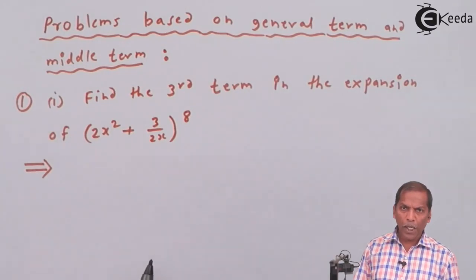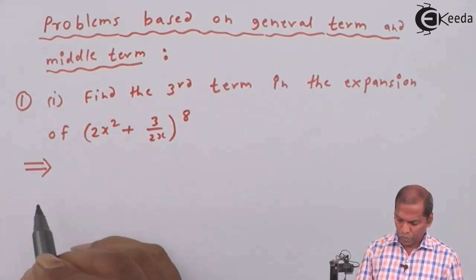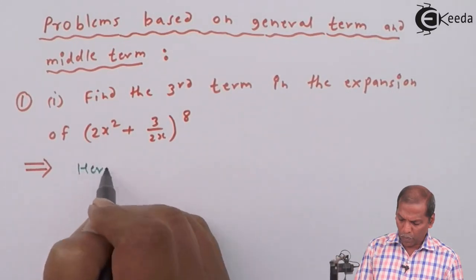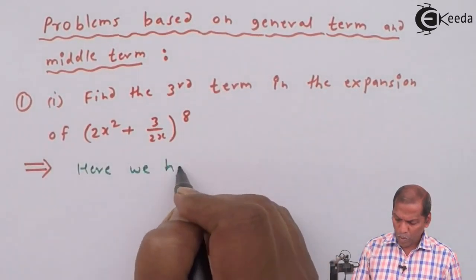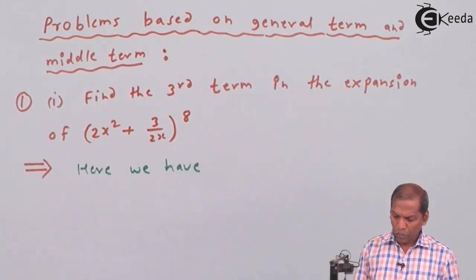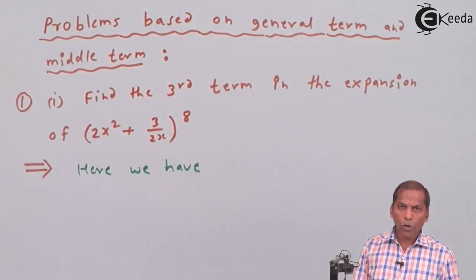Now let's see the solution. Here we have this problem, we have to compare with (a + b)ⁿ.